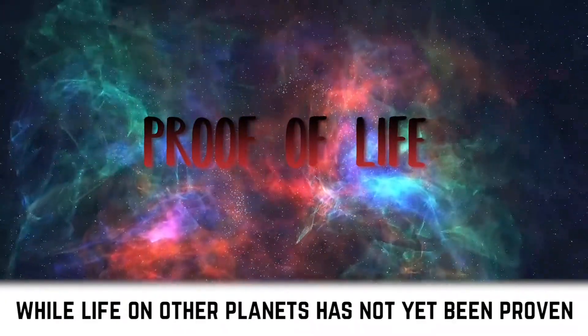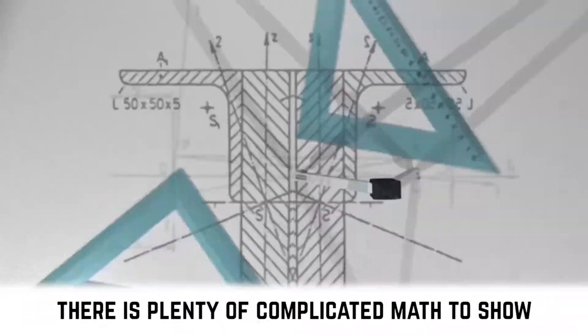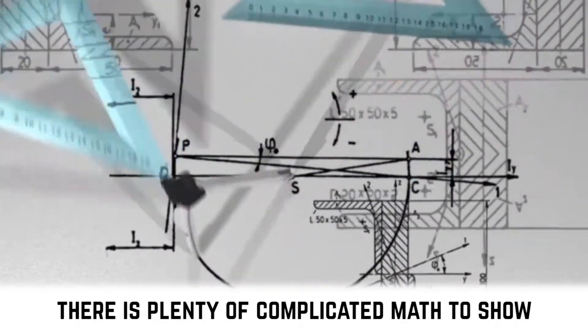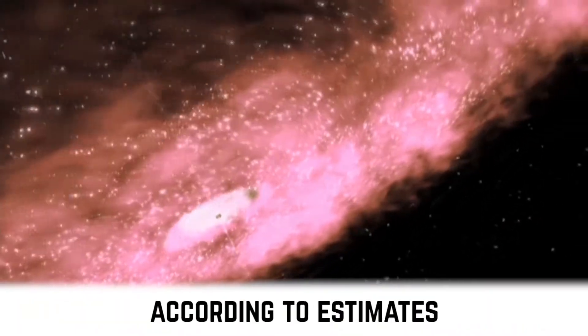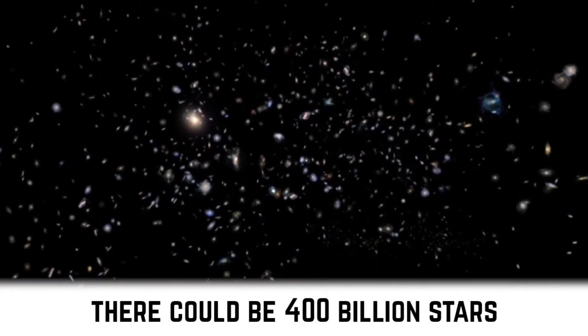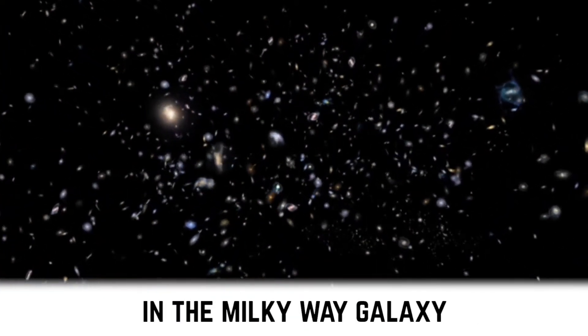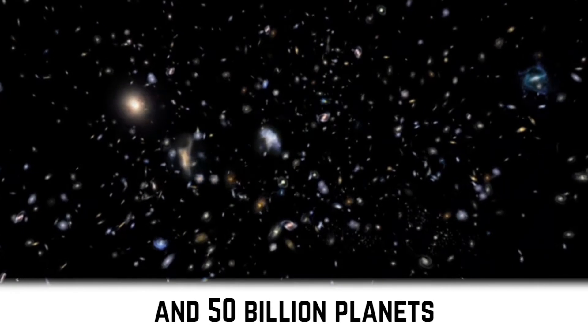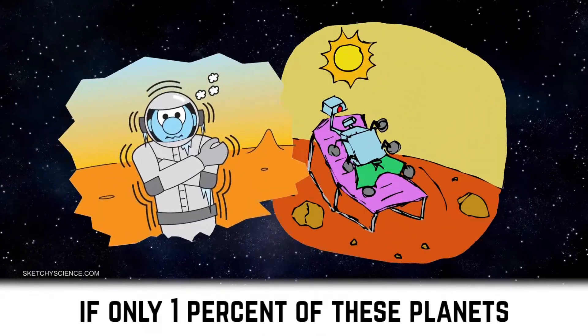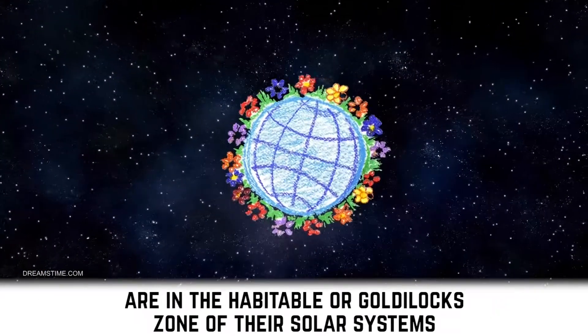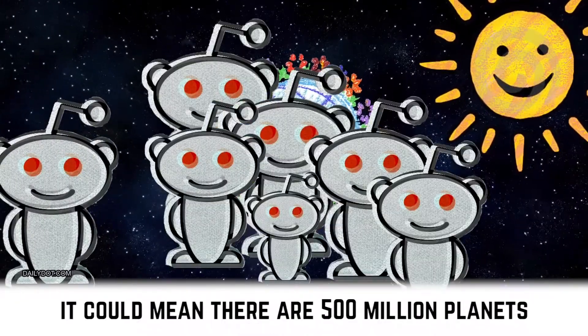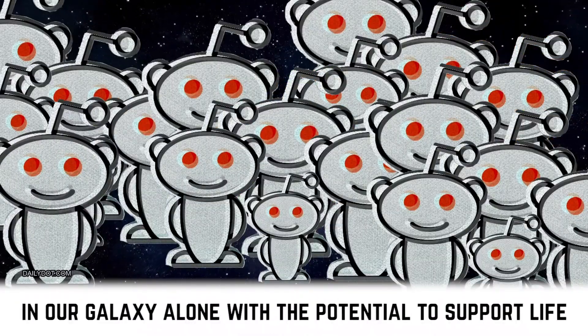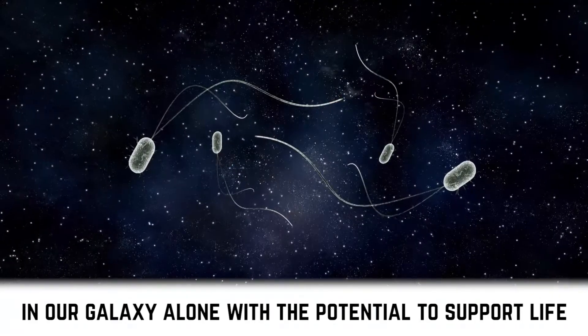While life on other planets has not yet been proven, there is plenty of complicated math to show that it may, in fact, be a common occurrence. According to estimates, there could be 400 billion stars in the Milky Way galaxy and 50 billion planets. If only 1% of these planets are in the habitable or Goldilocks zone of their solar systems, it could mean there are 500 million planets in our galaxy alone with the potential to support life.